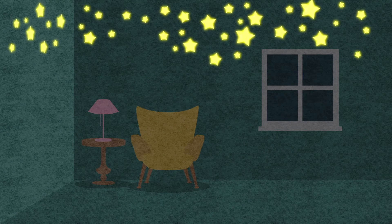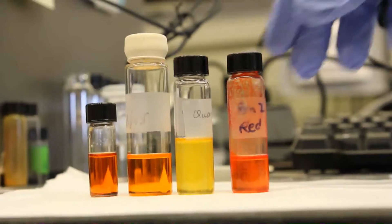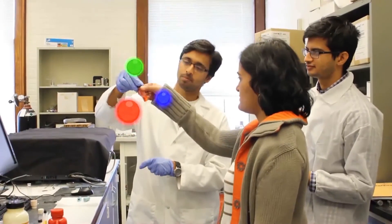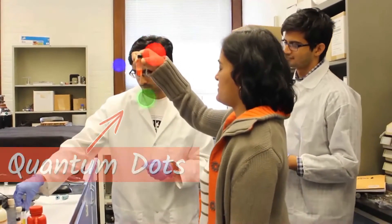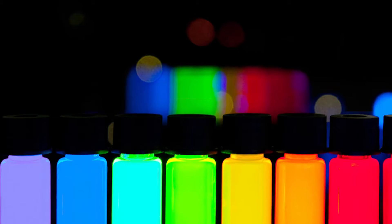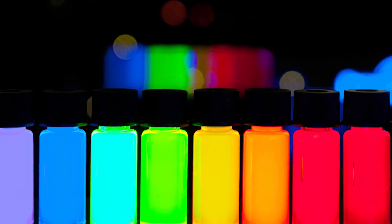Quantum dots do the same thing. Quantum dots emit light really brightly and they can emit light of different colors. You can imagine quantum dots as really small glow-in-the-dark marbles, except that they glow different bright colors like blue or red or yellow.